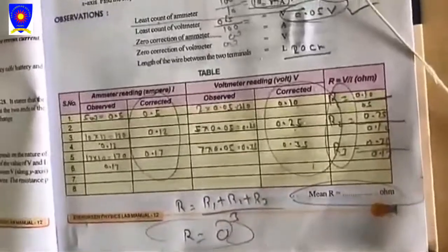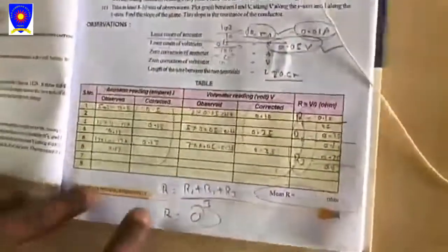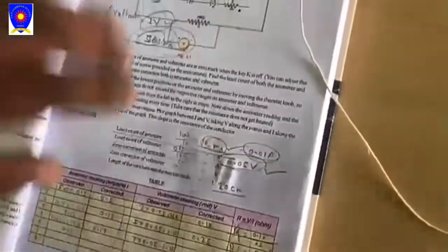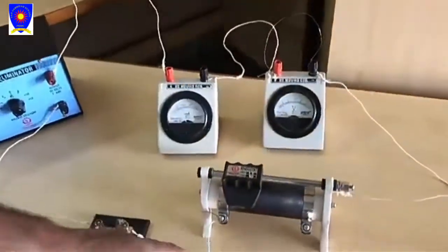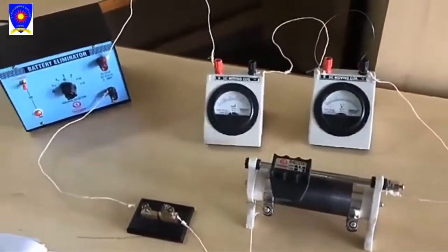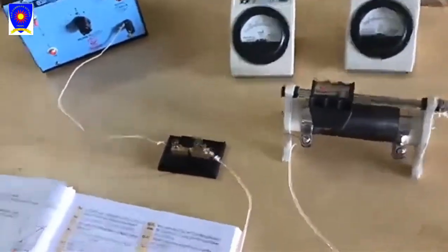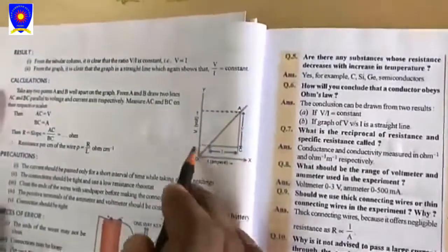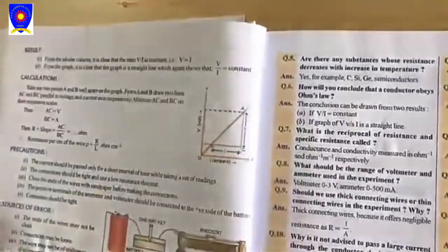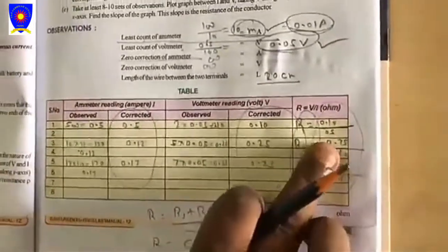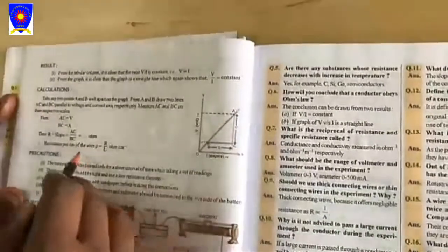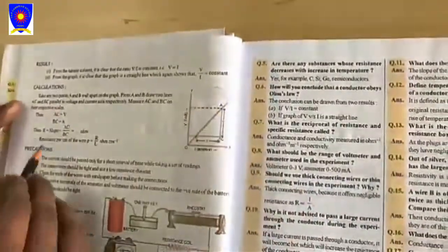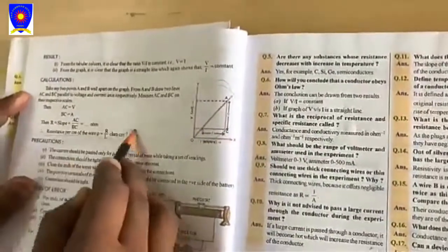This is our practical which is related to Ohm's law. If you will get capital R, you can also plot a graph. We know that X-axis represents current. Write the values which you will find from this point. You can find resistance per centimeter of wire.